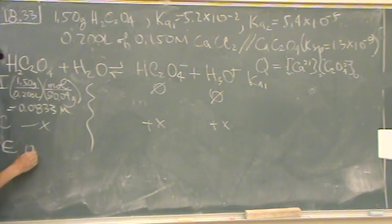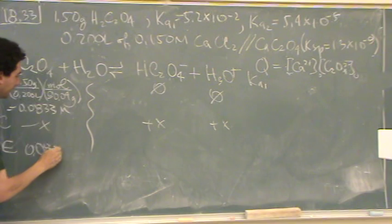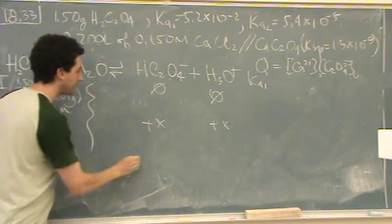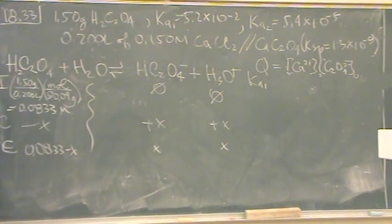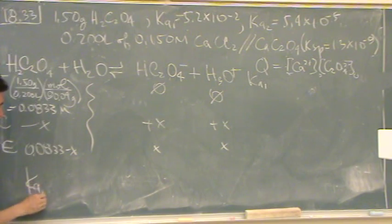Okay, so now I'm going to have Ka1, it's a numerical value, equal to x squared over 0.0833 minus x.